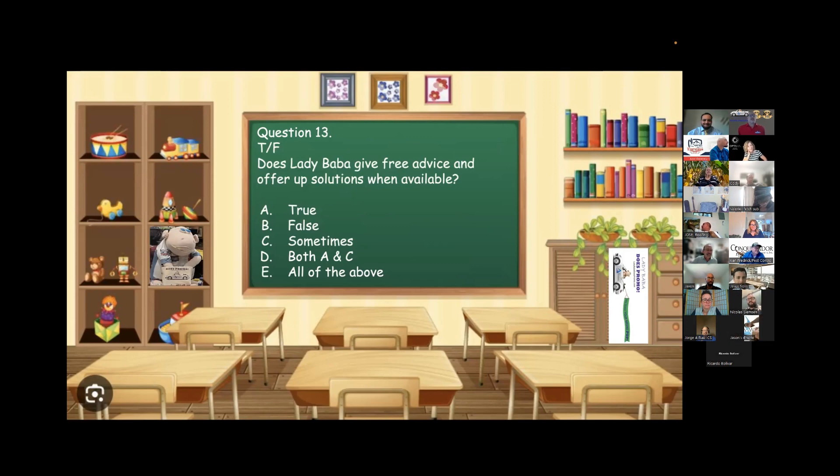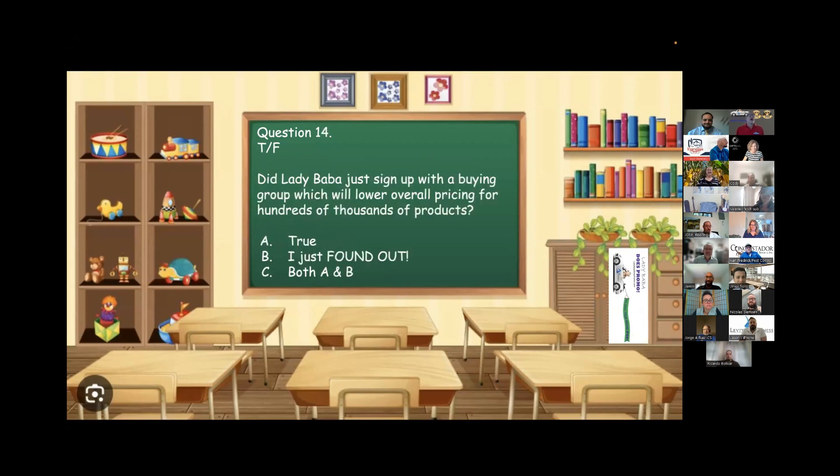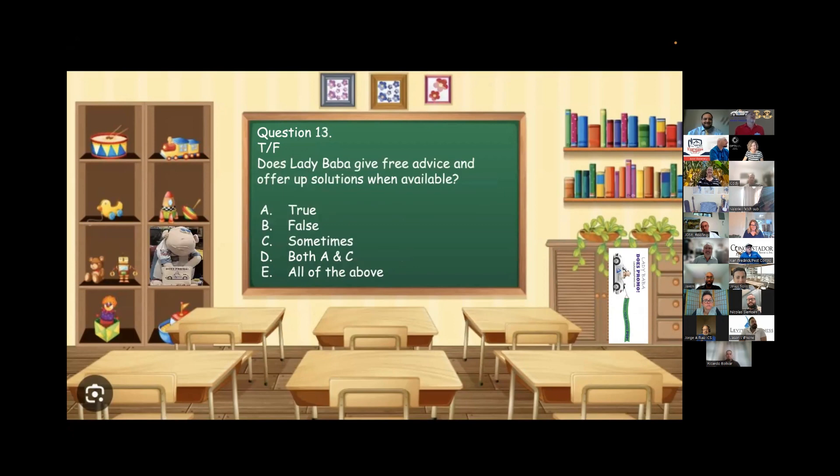Question 13. Javon, true or false? Lady Baba gives free advice and offers up solutions when available. A, true. B, false. C, sometimes. D, A and C or E, all of the above. A, true. A, true. We would also accept C as an answer.